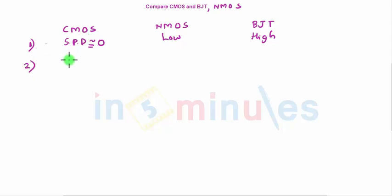Input impedance, we know that CMOS and NMOS technologies, both have an SiO2 layer, so they will have very high input impedance. This is same, high input impedance here also. BJT, you have low input impedance.